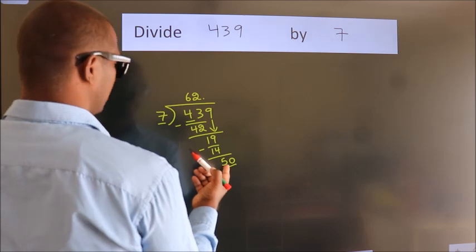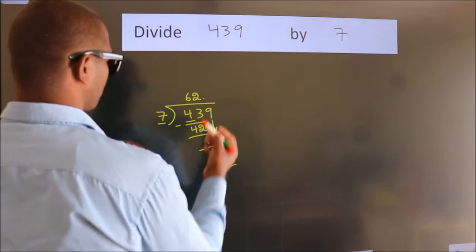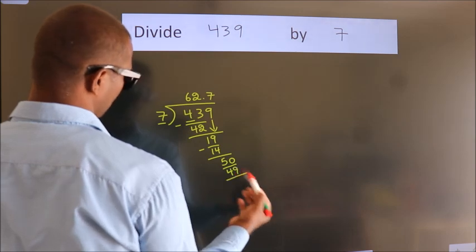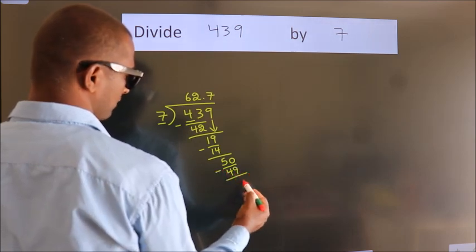A number close to 50 in the 7 table is 7 times 7, which is 49. Now we subtract. We get 1.